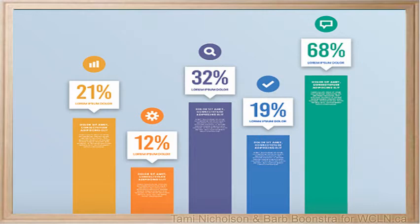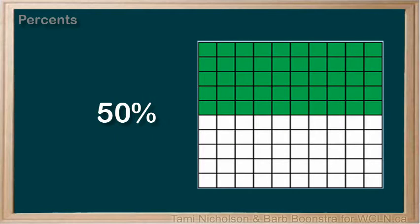Percents make it easy to compare ratios because they are always out of 100. Let's look at some percents. This is 50% — this would be 50 parts out of 100 parts.